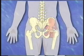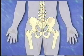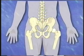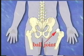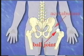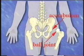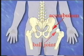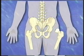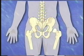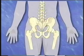A joint is where the ends of two or more bones meet. For example, the hip is a ball and socket joint. It is formed by the upper end of the thigh bone — the ball — fitting into the socket part of the pelvis, called the acetabulum.